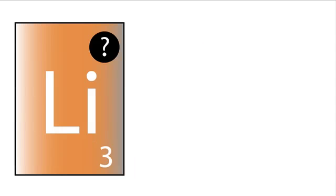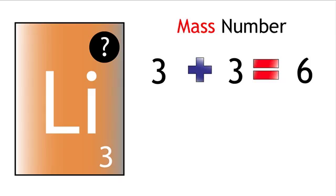So for one isotopic form, the mass number would be 3 plus 3, 6. So we would have Li 6.